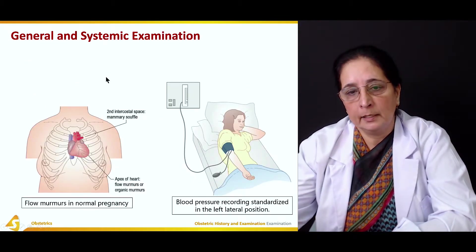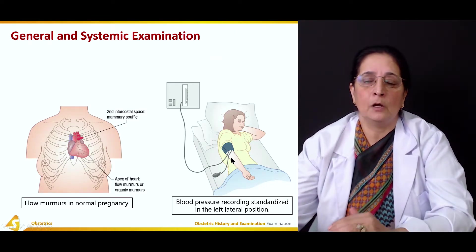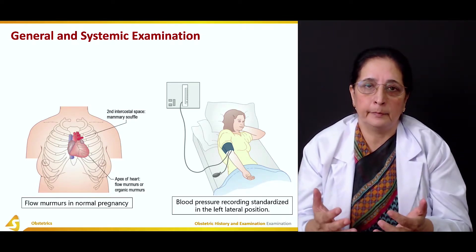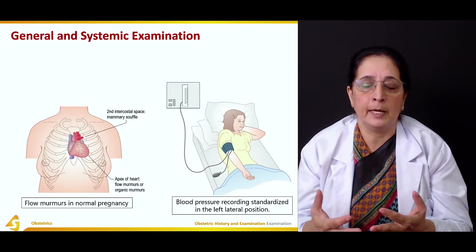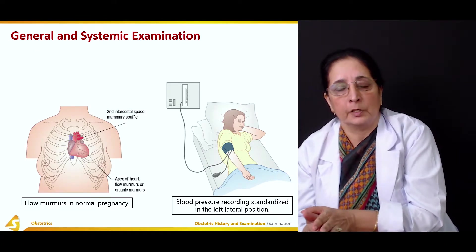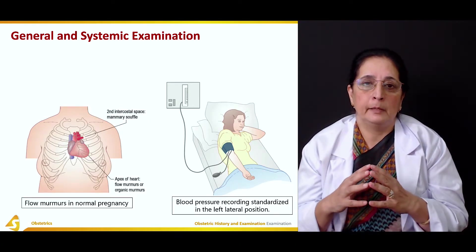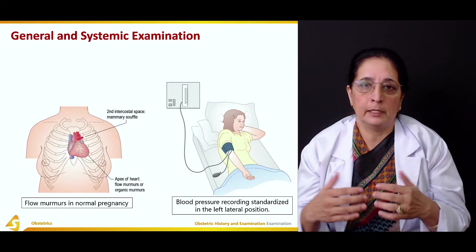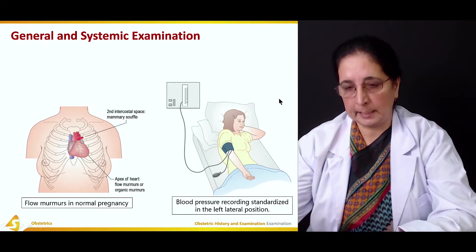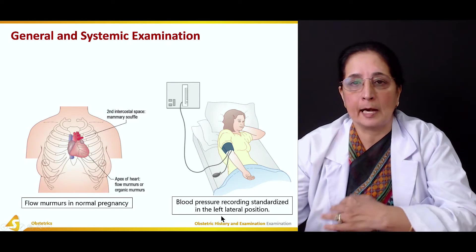Blood pressure recording is done on each visit. If the abdomen or uterus is large, the patient should be in the left lateral position. This is to relieve the pressure of the gravid uterus on blood vessels, which can affect the blood pressure reading. So blood pressure is recorded with the patient in the left lateral position.